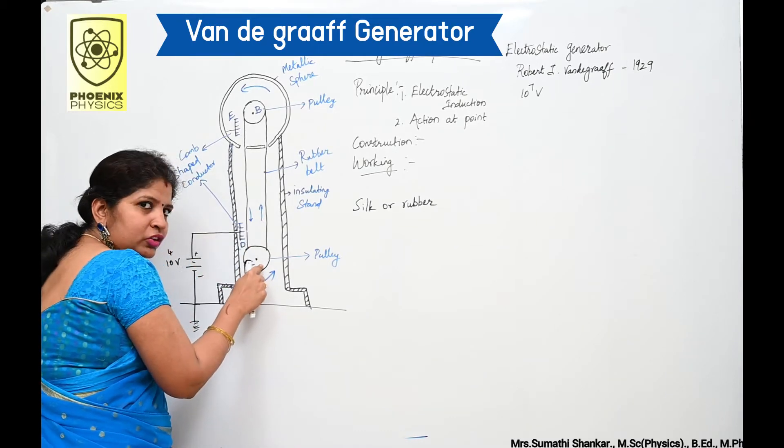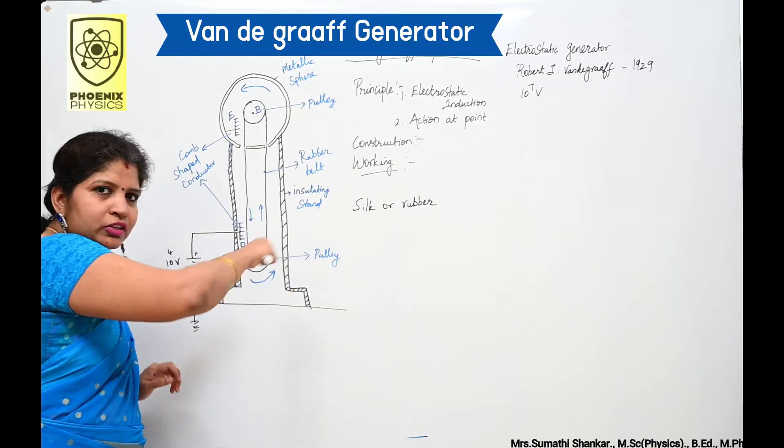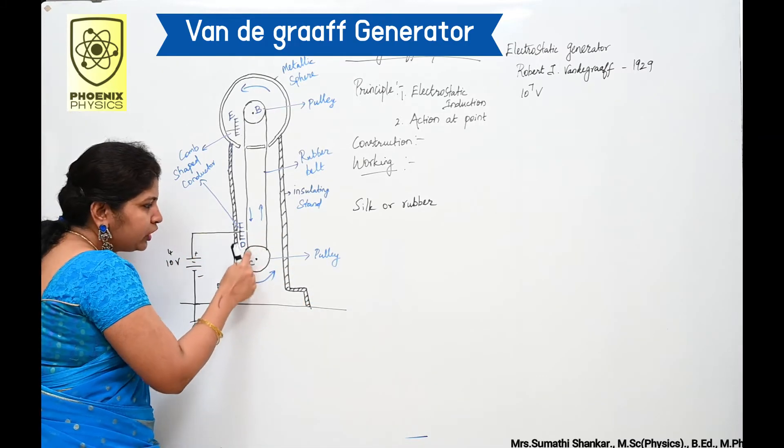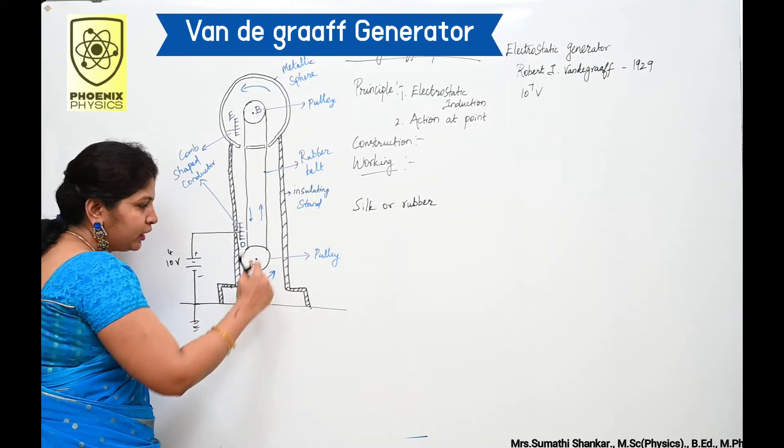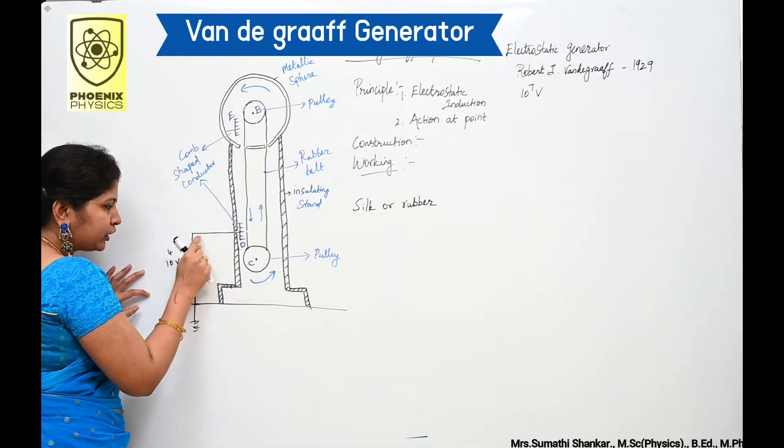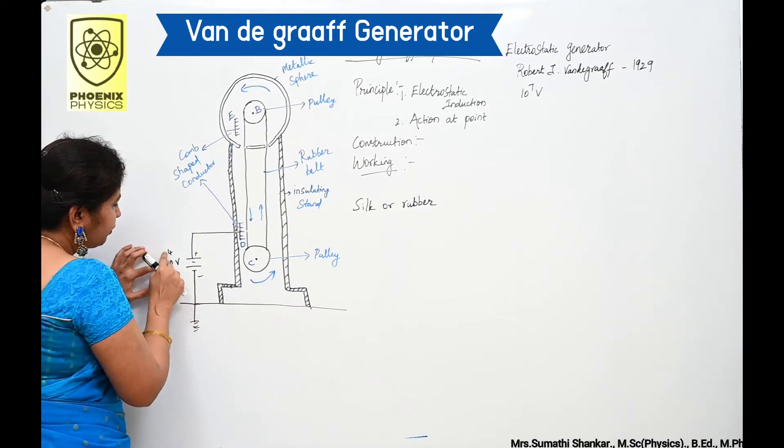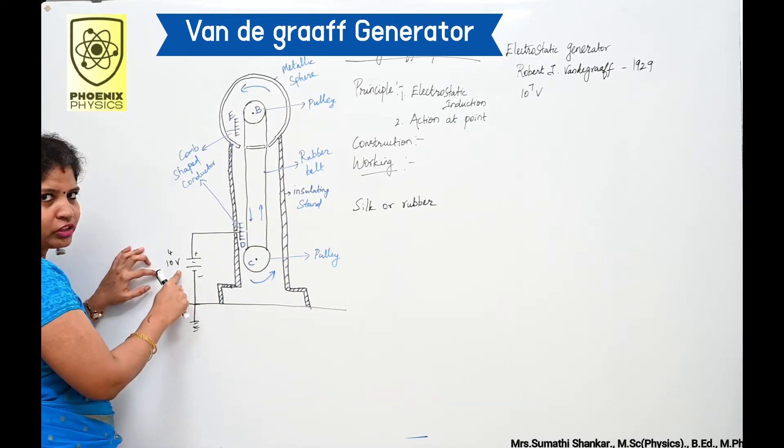Here pulley C is driven continuously by electrical motor. So pulley C rotates in the anti-clockwise direction. Here comb D is connected to the power supply which supplies 10 to the power of 4 volt potential difference.